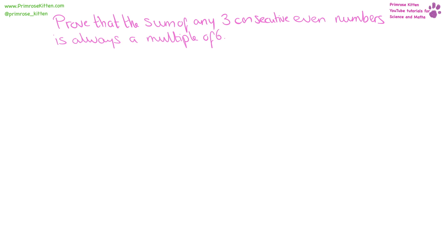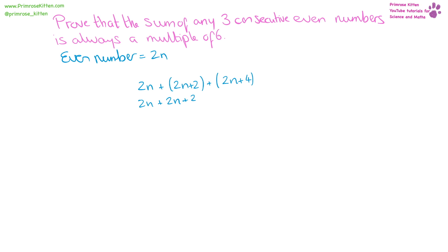Proof that the sum of any three consecutive even numbers is always a multiple of six. An even number is 2n, so if our first even number is 2n, to get to the next even number we add two, giving 2n plus two. To get the third, we add another two: 2n plus four. Adding all three: 2n plus (2n plus 2) plus (2n plus 4) gives us 6n plus 6. We can take six outside the brackets, giving 6(n plus 1), proving the sum is always a multiple of six.